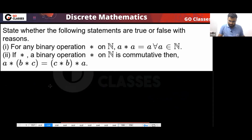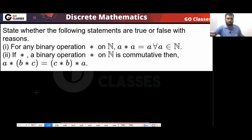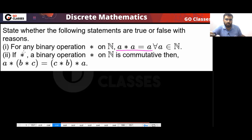Which of these statements is correct? The first statement says: for any binary operation on the set of natural numbers, A★A is equal to A. This statement is definitely false.